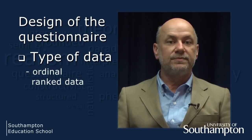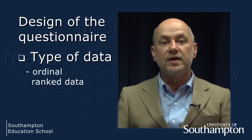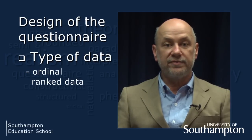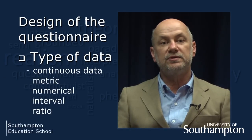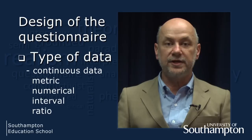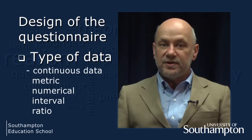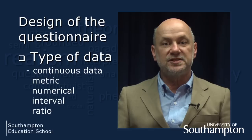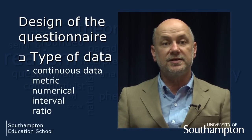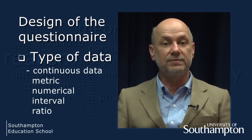Ordinal or ranked data are similar to category data, but instead of just identifying the categories associated with each item, participants are asked to rank their preferences for the categories. Continuous data, also known as metric, numerical, interval and ratio data, is gained by any question that can be answered by a number. It could be an open-ended question asking participants to tell you how many times they attend lectures, or it could involve asking them to relate the importance or intensity of some experience.